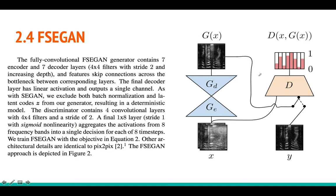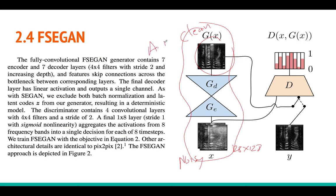In FSE-GAN, instead of raw audio, the input is a spectrogram — log mel filter bank energies — as small images of dimension 128×128. These go through a generator with seven-layer encoder and seven-layer decoder using 2D convolutions. The decoder generates a clean spectrogram corresponding to the noisy input spectrogram. Because Z is removed, this is a deterministic model, essentially a convolutional autoencoder, and the discriminator similarly tries to tell whether the output is real or generated.